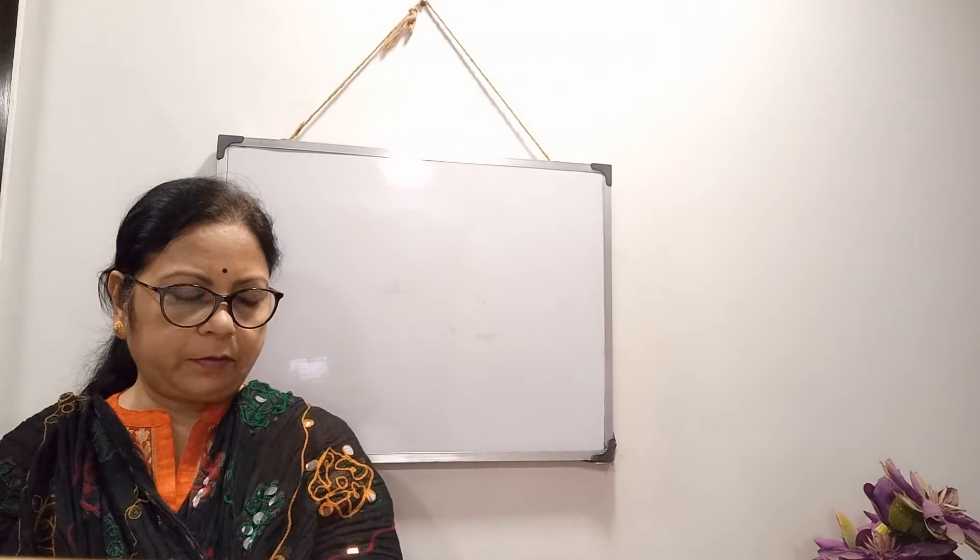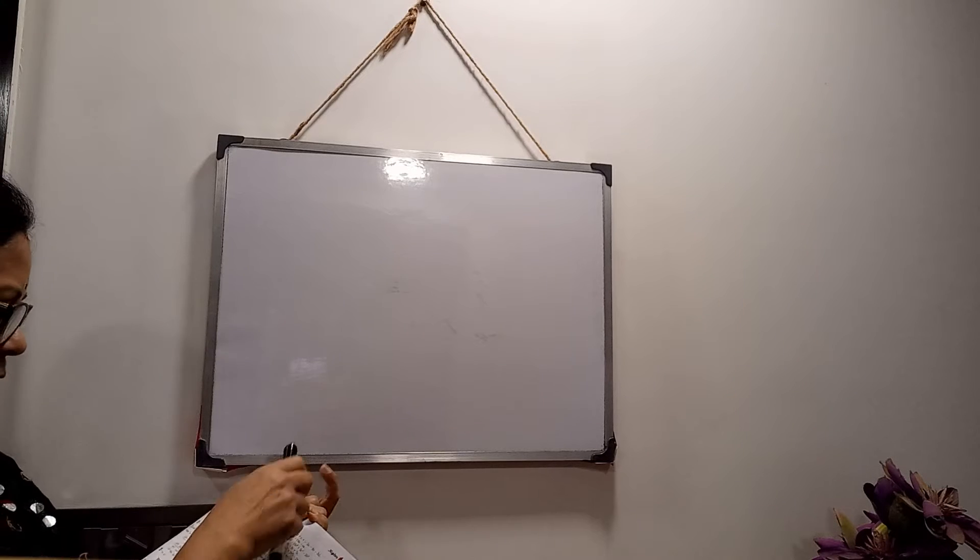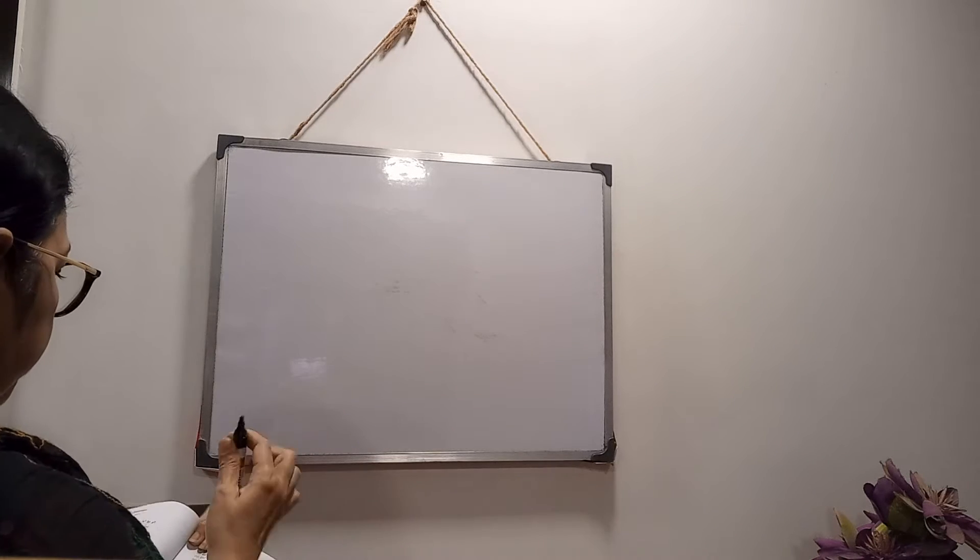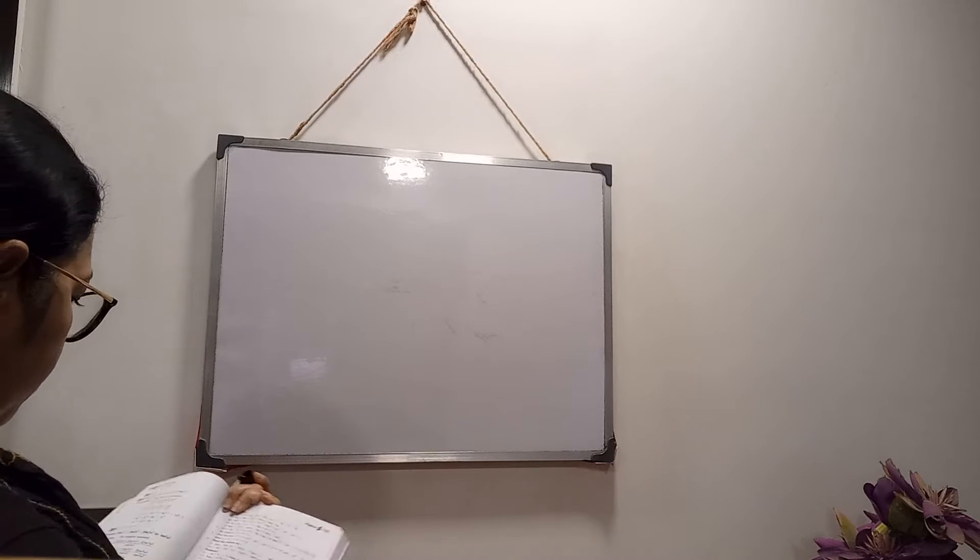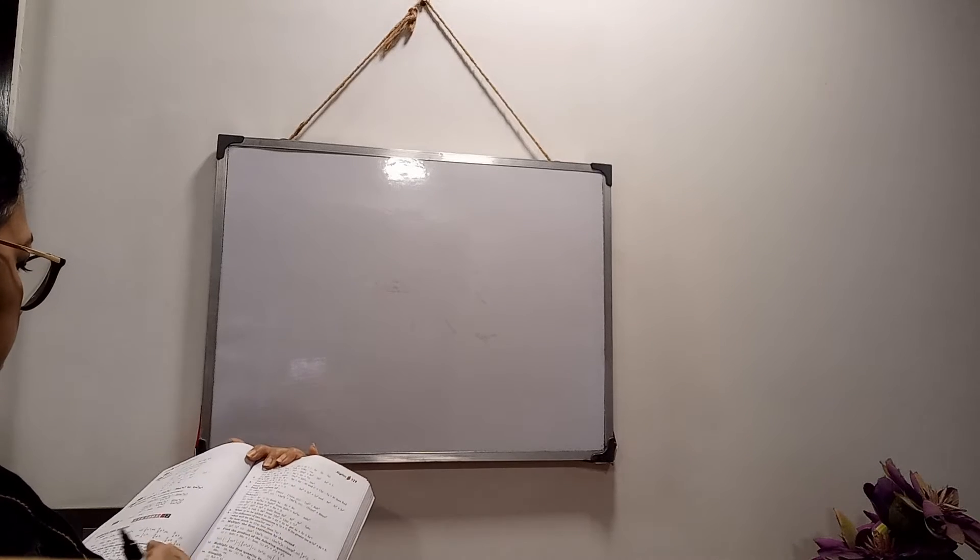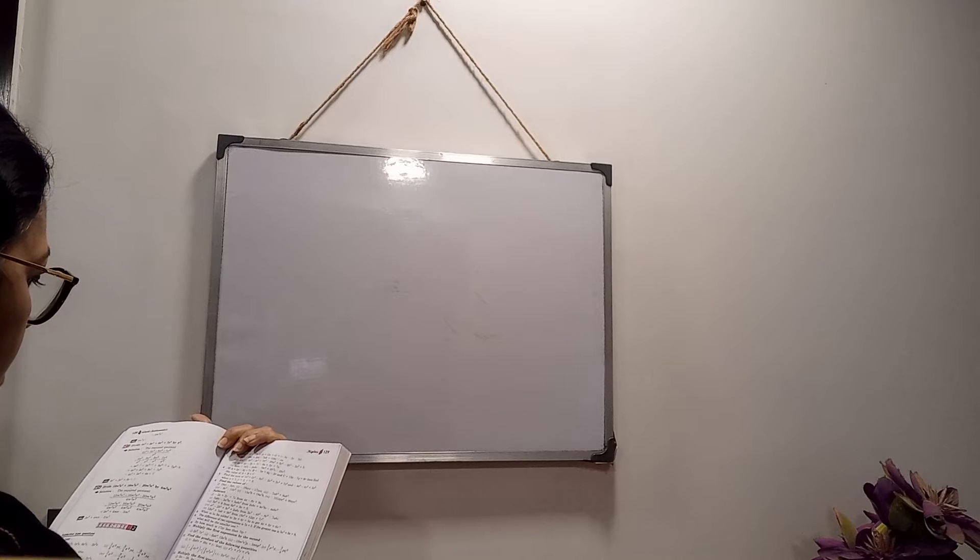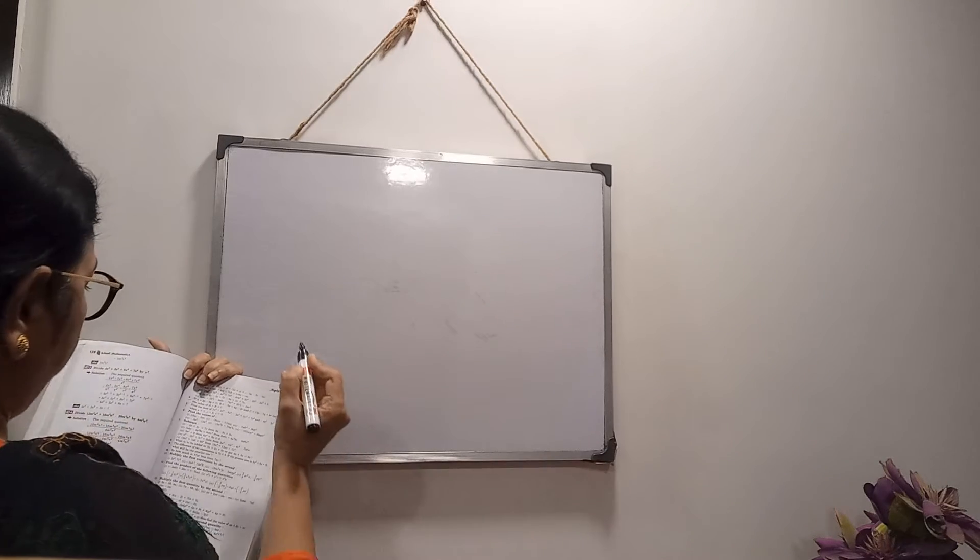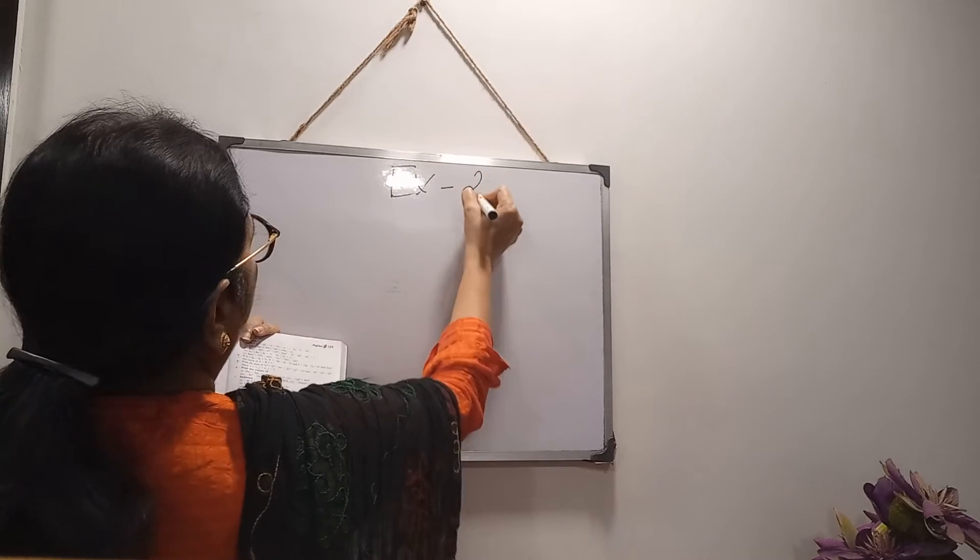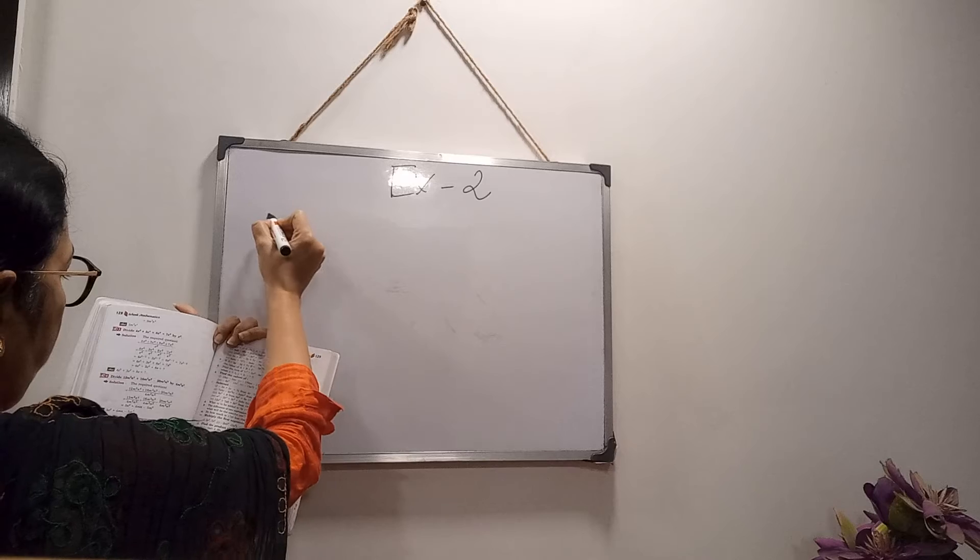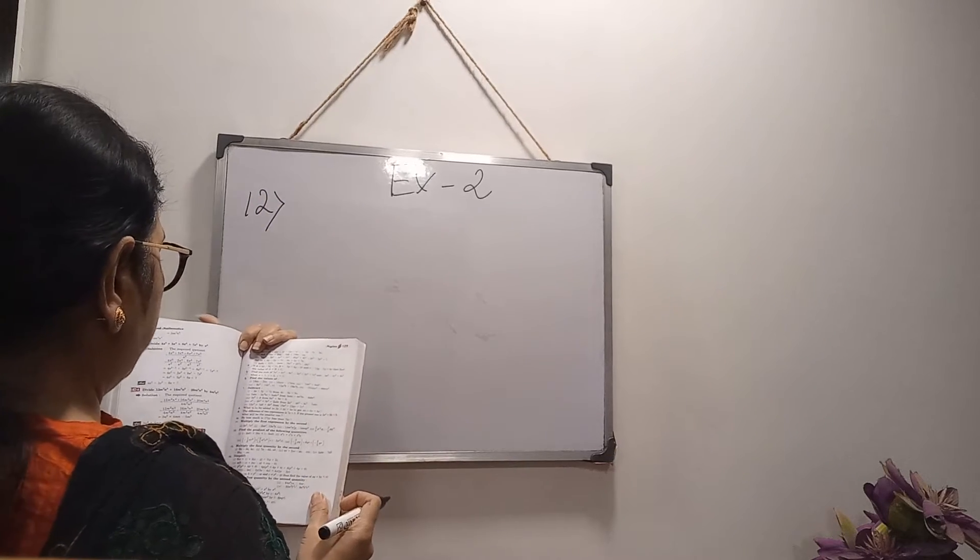Hello students, now continuation of exercise 2. Up to sum number 8 I have done in previous video. Now, actually it is a revisional chapter, so all of you have done already in class 7. All of you know how to multiply algebraic expressions. Now, doing from 12, find the product, exercise 2, algebra, sum number 12.